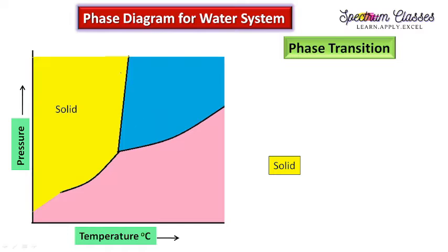This is also explained on the basis of chemical potential, but this video is made for BSc and BTech students, so I am not going into the term chemical potential — I will discuss that separately. If you need it, you can write in the comment section. So now we know: this is our solid, this is our liquid, and this is our gas.